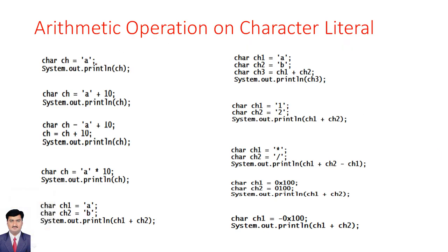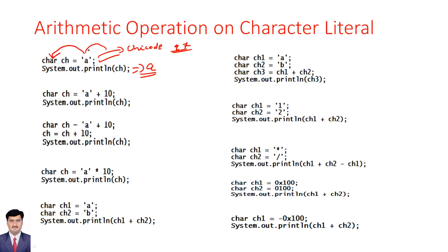First program: char ch = 'A'. The output of this program will be 'A' only. Even though it is internally represented as Unicode character 97, it still prints 'A' because we are assigning it to a character data type. Internally it might be 97, but since it is a character data type, the equivalent value of 'A' is 'A' itself.